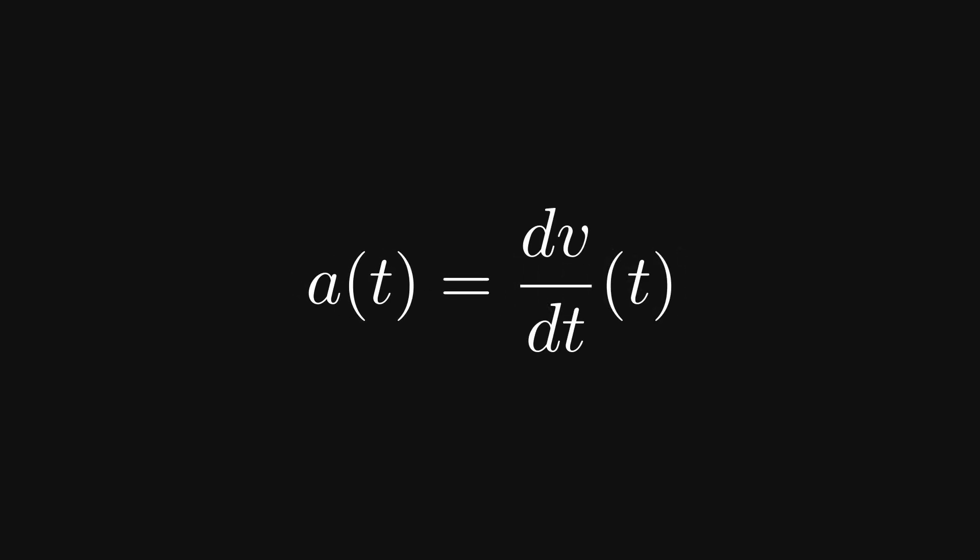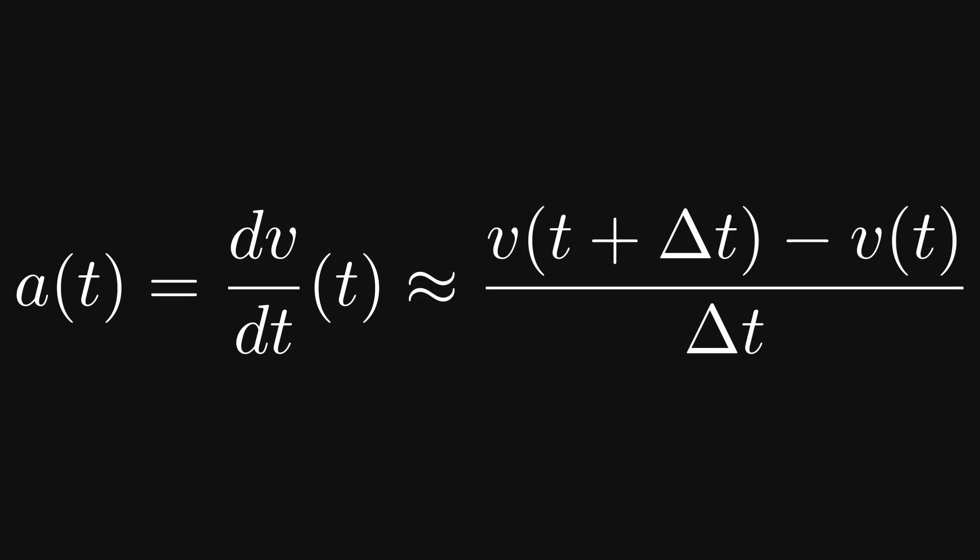Well, it's the derivative of velocity with respect to time. But we're going to replace this perfect analytical dv dt with a numerical approximation of the derivative. You might know that if we were to take the limit as delta t goes to zero, this would be exactly equal.